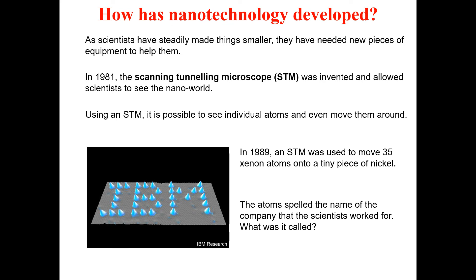The purpose of moving those 35 xenon atoms was to spell the name of the company the scientists worked for. As you can see in the figure, the name spelled out was 'IBM.' Those 35 xenon atoms were arranged using the STM to write the company name IBM — a landmark demonstration of atomic-scale manipulation.